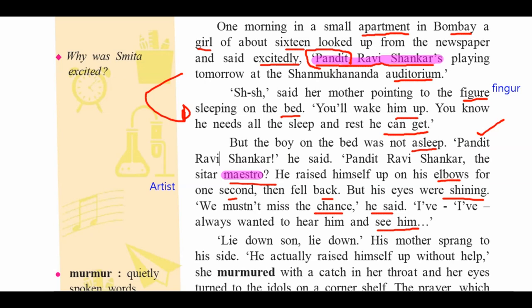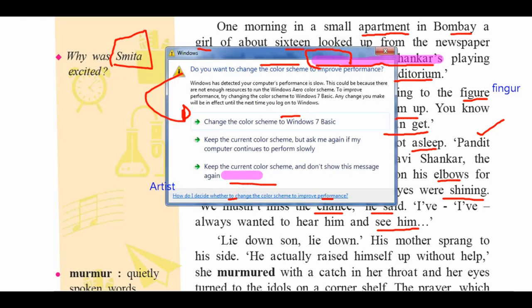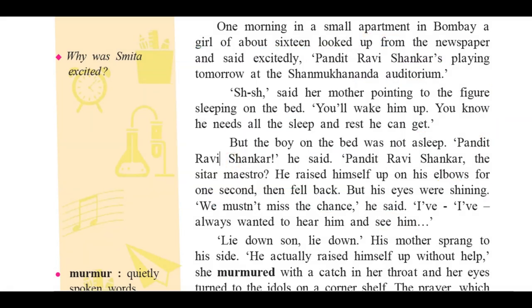One question: Why was Smita excited? Smita is the name of the girl. She was excited because Pandit Ravi Shankar is going to play tomorrow at Chanmukaranda Auditorium — this is the concert. That is why the title is The Concert. This is the real story; only the real names of Pandit Ravi Shankar and Ustad Allah Rakha are given.